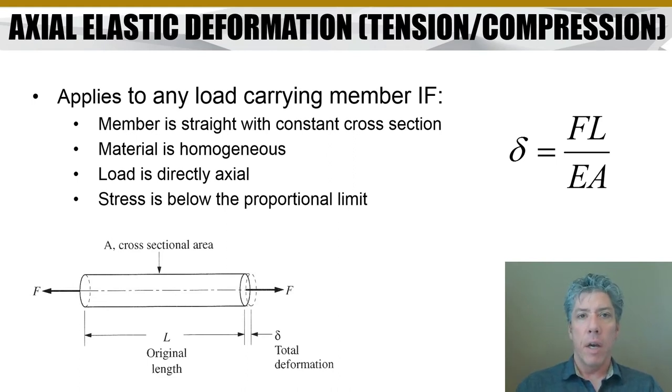We can't have a spring with varying diameter or varying wire size. That spring's stiffness is going to change along the length. In the same way, our members have to be uniform. They have to have the same cross-sectional area along the entire length, same material properties along the entire length. Plus, we can't stretch the spring, these materials, so far that they start to yield, that they go outside of the proportional limit.